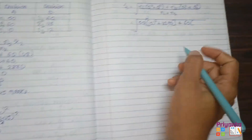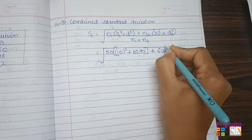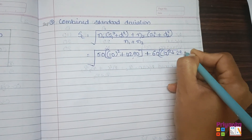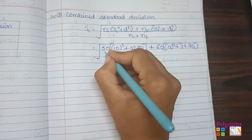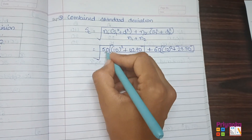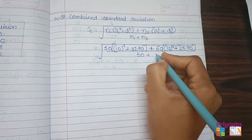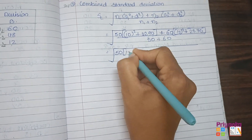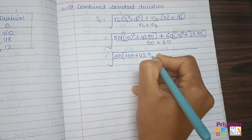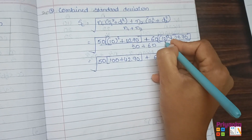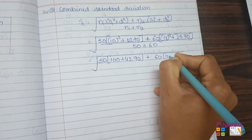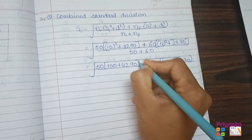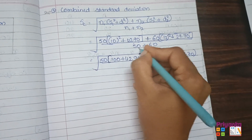For n2 = 60: s2 = 12, so s2² = 144. Plus d2² = 29.70. Close the bracket and divide by n1 + n2 = 50 + 60 = 110. Inside the brackets: 10² + 42.90 = 100 + 42.90 = 142.90, and 12² + 29.70 = 144 + 29.70 = 173.70.